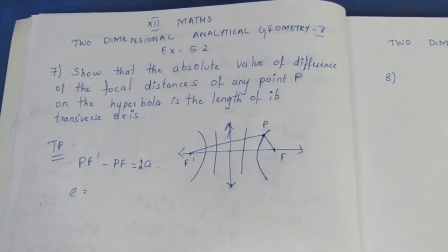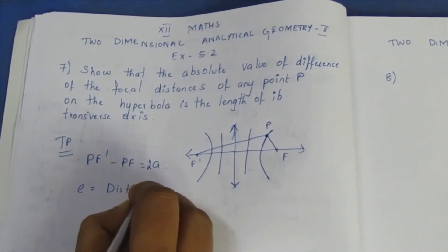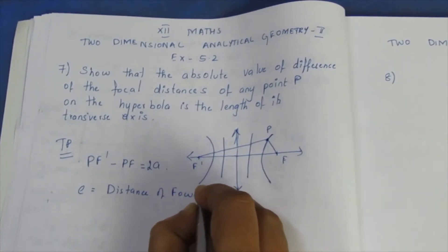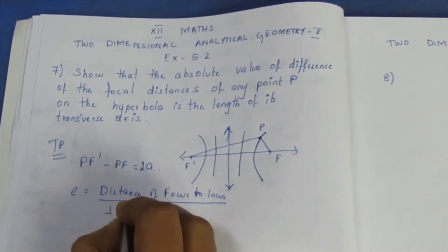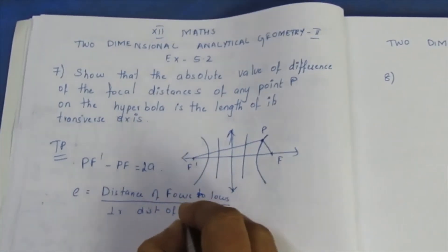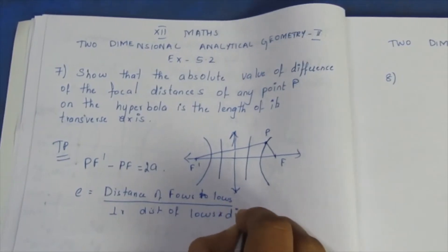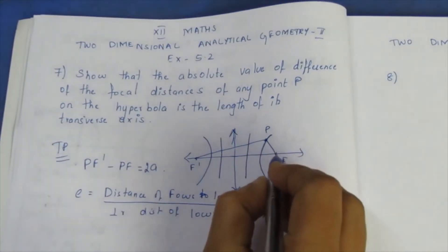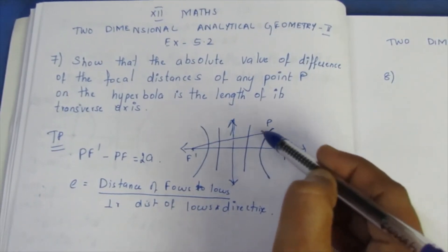Eccentricity is equal to the distance of the focus to the locus, divided by the perpendicular distance of the locus to the directrix. Here P is the moving point on the hyperbola, and we consider the perpendicular distance from P to the directrix.